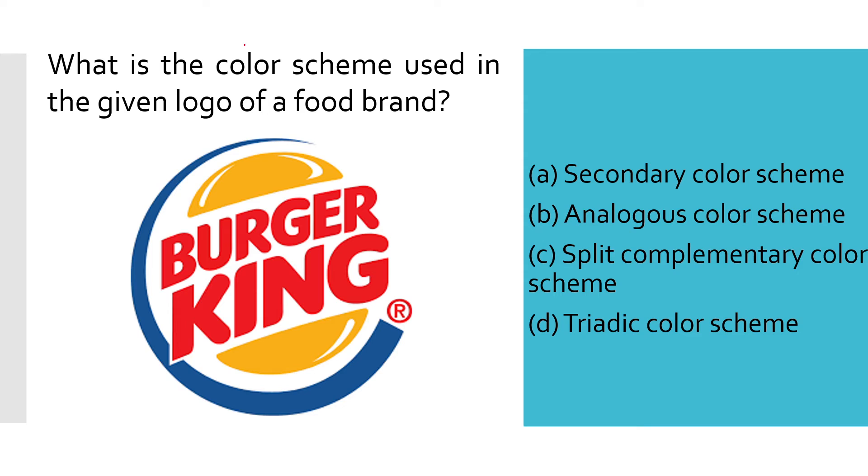Next: What is the color scheme used in the given logo of the food brand? Options are secondary color scheme, analogous color scheme, split complementary color scheme, or triadic color scheme. The correct answer is triadic color scheme. In the color wheel, you will have the colors like blue somewhere here and orange and red, equidistant. These are the triadic color scheme.